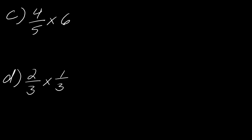I've got two more examples here. I strongly recommend that you pause the video and try these two on your own, then hit play when you're ready. For 4 fifths times 6, we have to think about what we know about 6 — 6 is actually over an invisible 1. So I can just apply the same rule: 4 times 6 is 24, 5 times 1 is 5, so this equals 24 over 5. And for the last one, this will be 2 over 9.